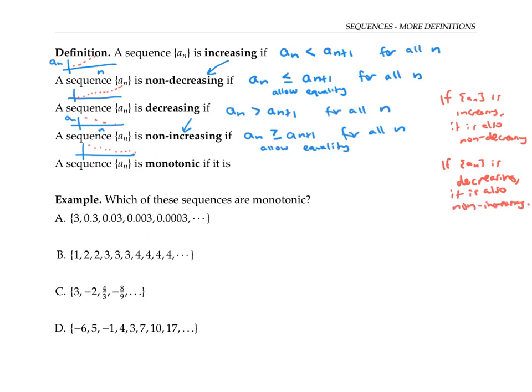A sequence is called monotonic if it is either non-decreasing or non-increasing.